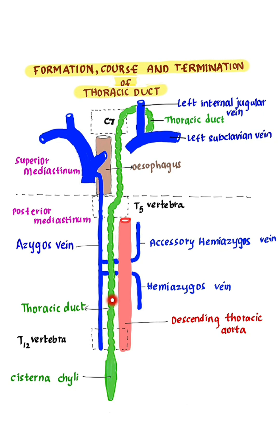It ascends within the posterior mediastinum from T12 vertebra to T5 vertebra. At the level of T5 vertebra, it crosses the midline from the right side to the left side, and then ascends within the superior mediastinum along the left edge of the esophagus, reaching the root of the neck.